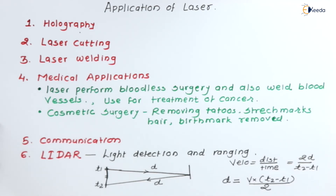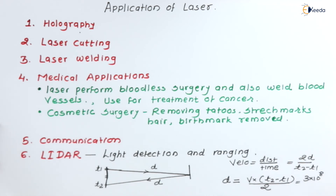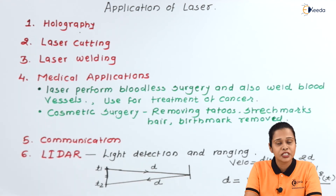Since the laser covers the distance twice, we write the total distance as 2D. Hence by using this formula, D is equal to velocity multiplied by (T2 minus T1) divided by 2. Since laser is an electromagnetic wave and is light, the velocity is 3 × 10⁸ meters per second. In this way we can find the distance between two objects using laser. These are the applications of laser.